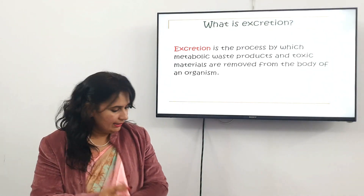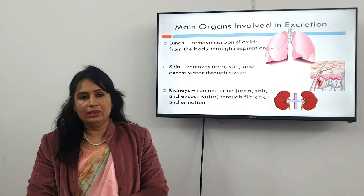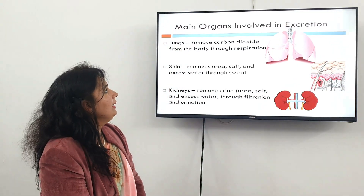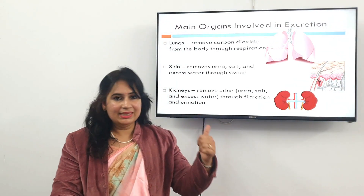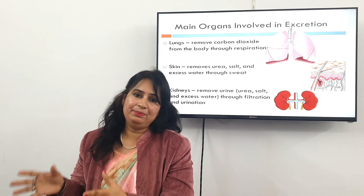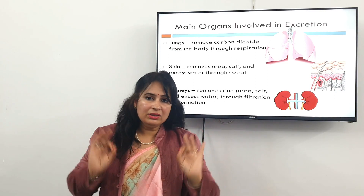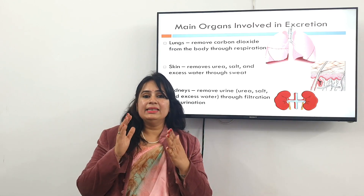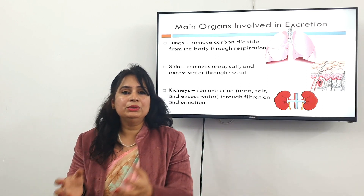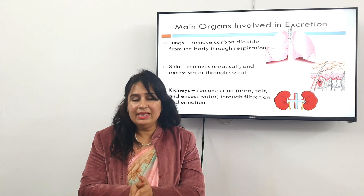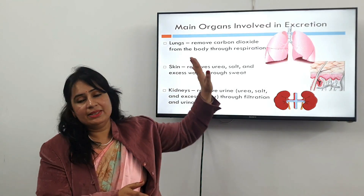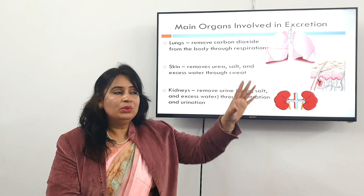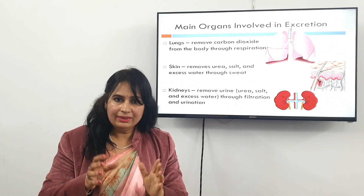The main organs involved in excretion: number one is the lungs. Every living thing respires — they take in oxygen and give out carbon dioxide. In taking in oxygen, they burn their glucose molecules to produce energy, and as a result of this, carbon dioxide is produced and removed through the lungs. So this is our first excretion organ.